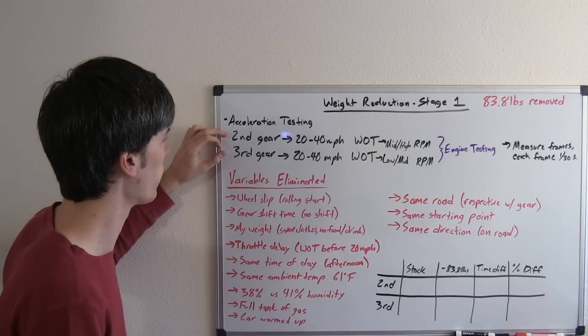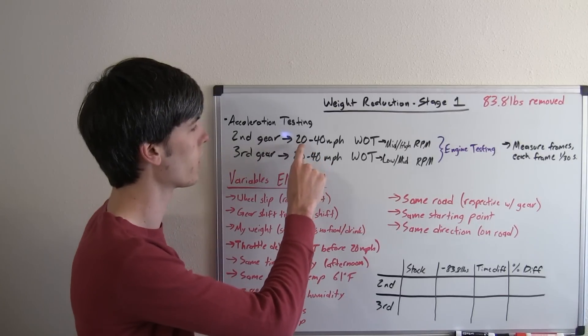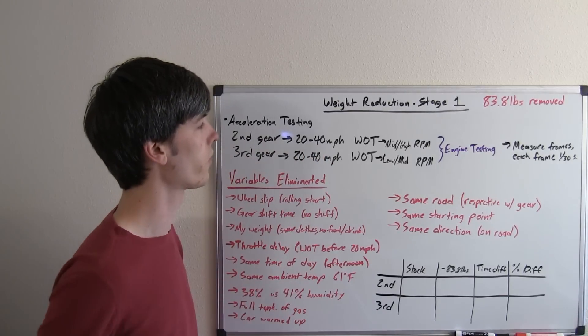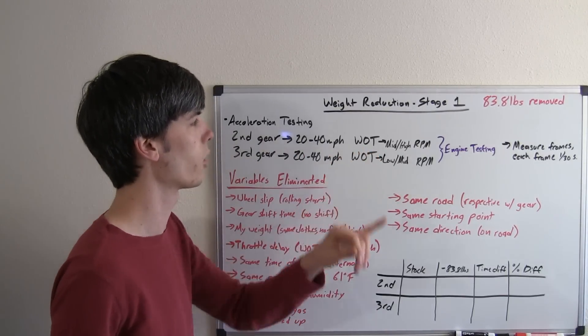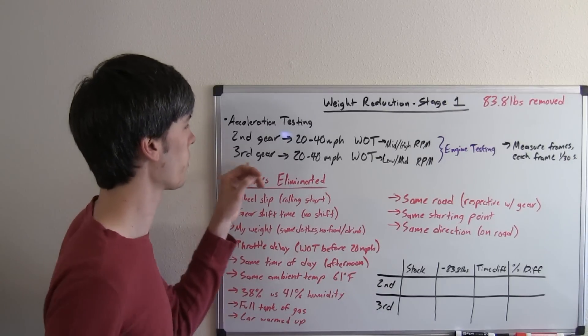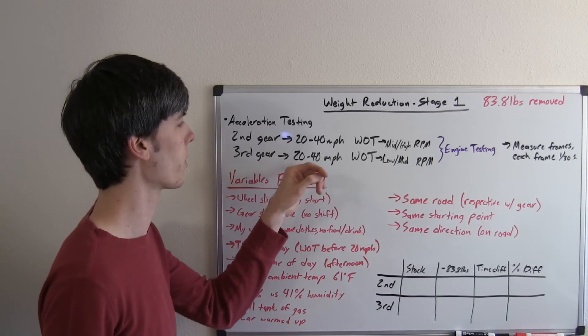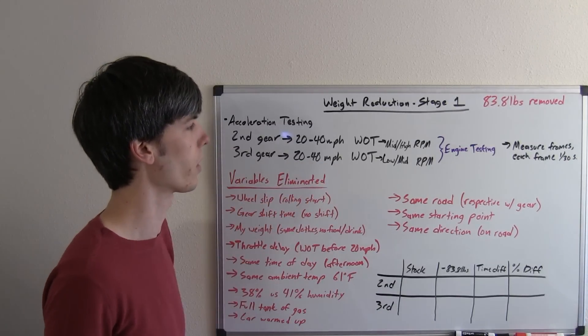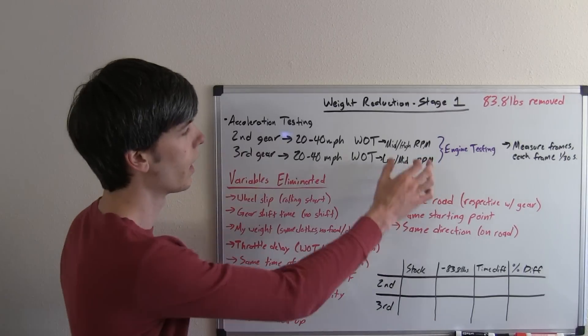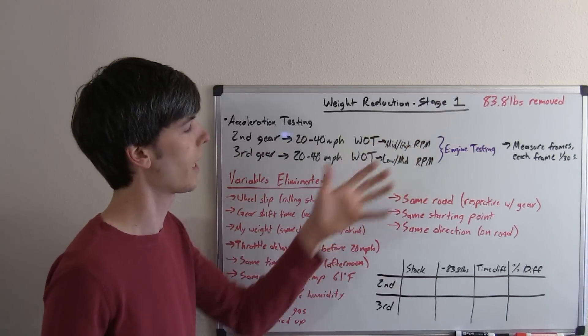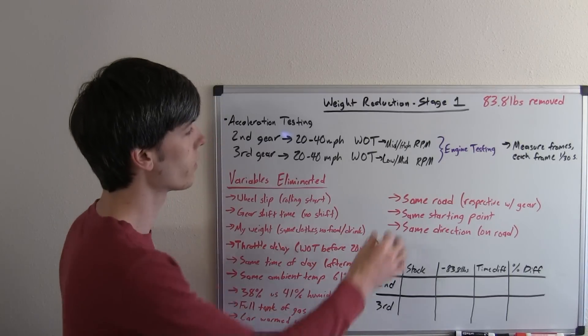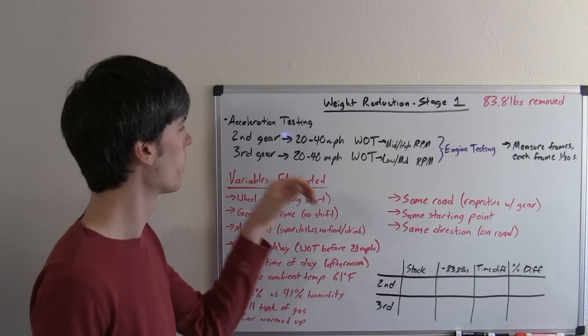What I've got is a second gear test where I'm going to leave it in second gear and drive from 20 miles per hour to 40 miles per hour at wide open throttle, and then I'm going to do a third gear test where I go from 20 miles per hour to 40 miles per hour at wide open throttle. Basically this is testing the mid to high RPM revs of the engine for second gear versus the low to mid RPM revs for third gear.